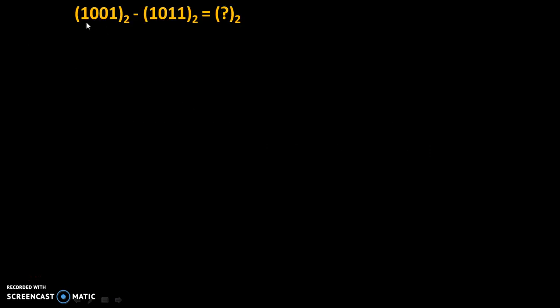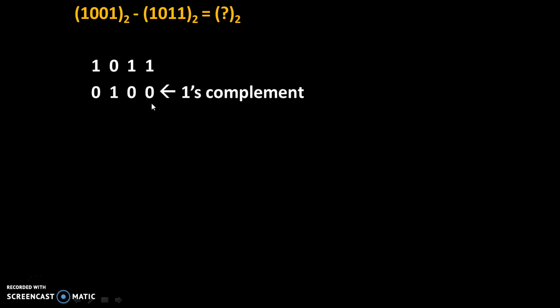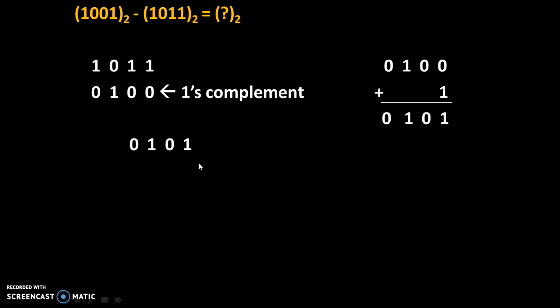Now let's see the second case: if carry does not get generated. The problem is 1001 base 2 minus 1011 base 2 equals question mark base 2. We will subtract the second binary number from the first binary number. We start with the second binary number, which is 1011. We take the 1's complement of it by replacing each 1 by 0 and each 0 by 1. Then we add 1 into it to get the 2's complement. According to rule 2, we add the 2's complement of the second number to the first number, which is 1001.